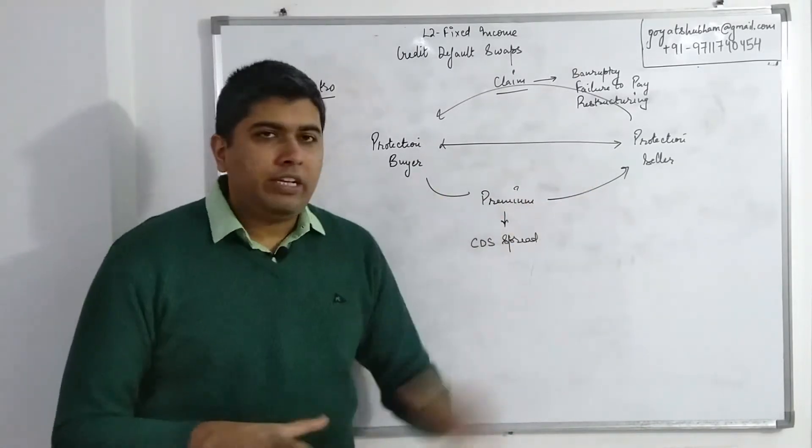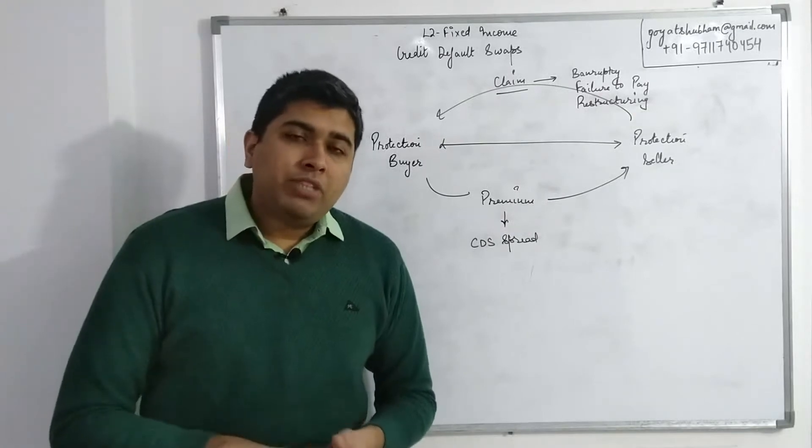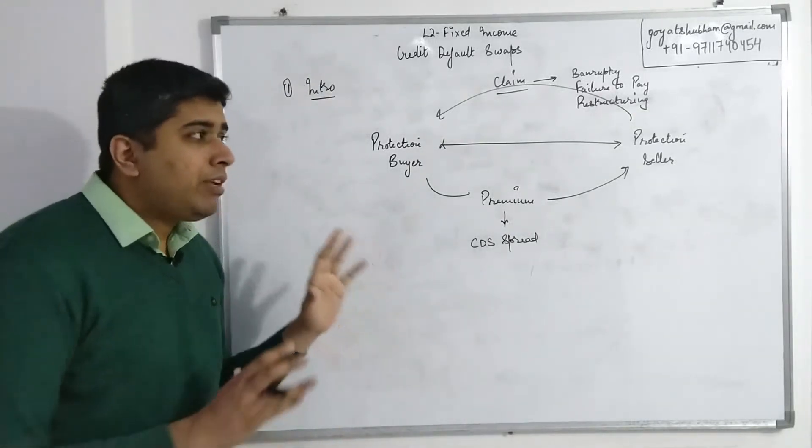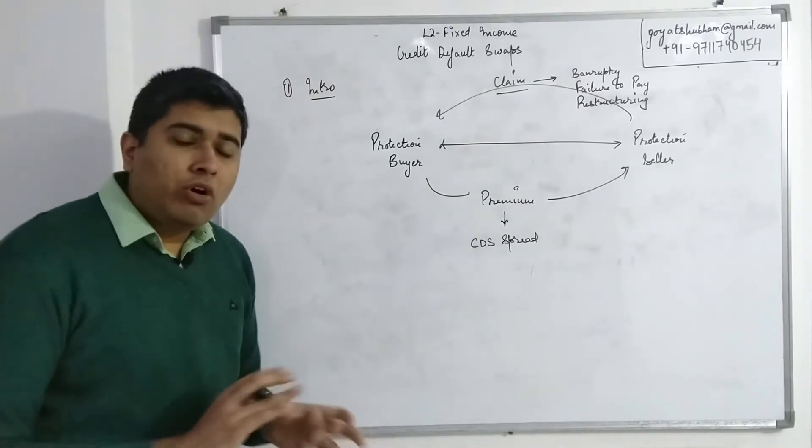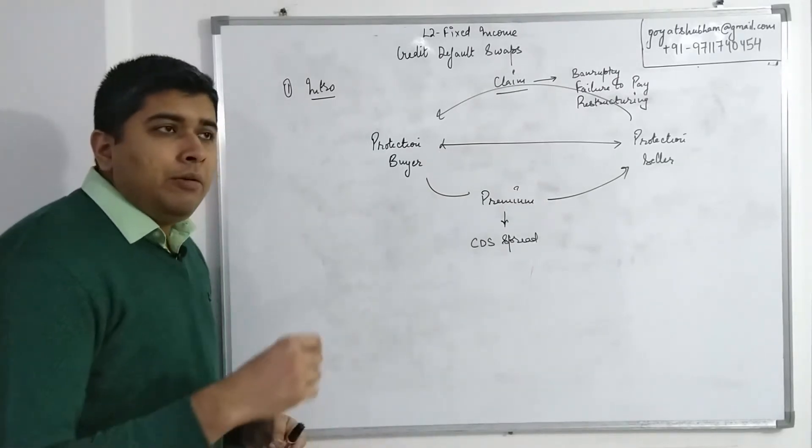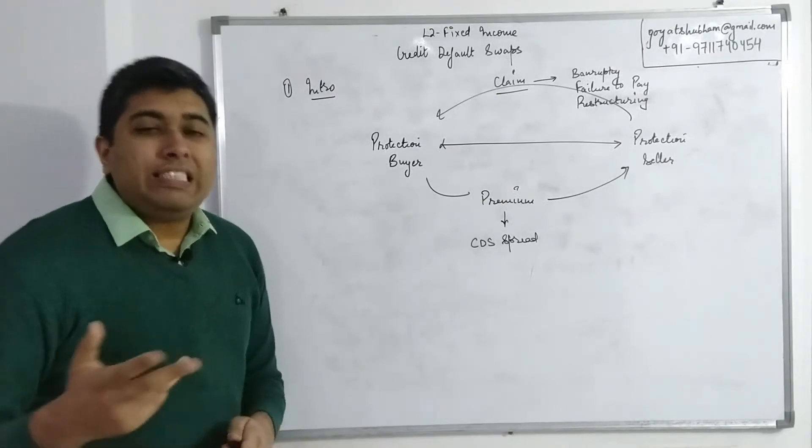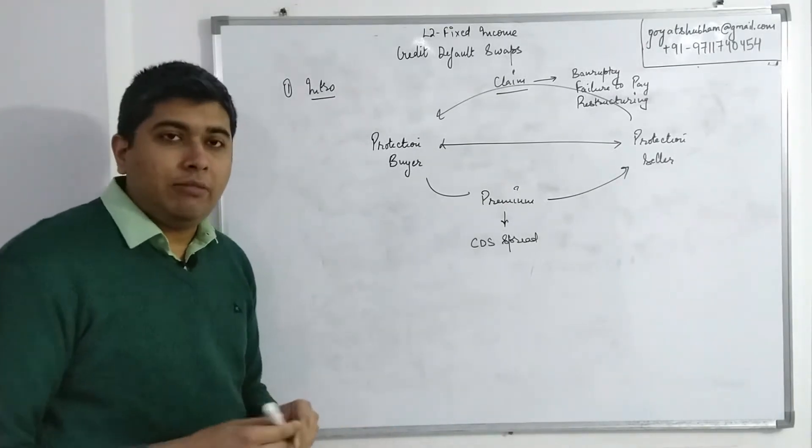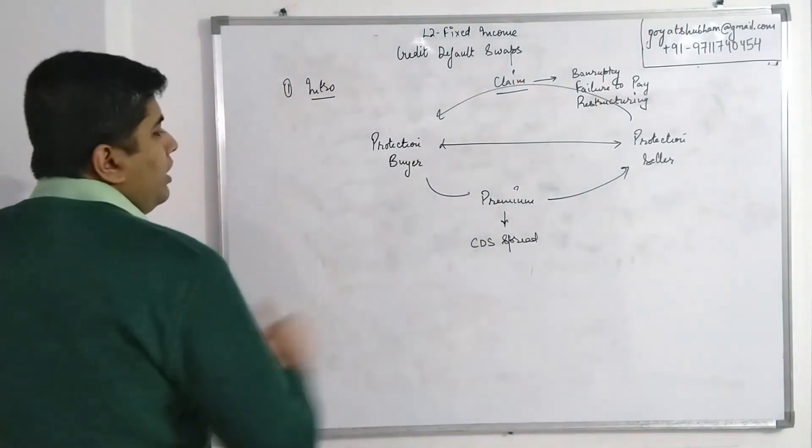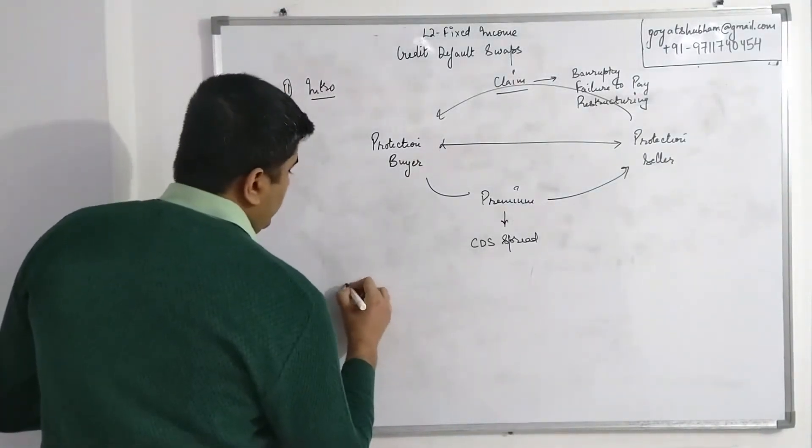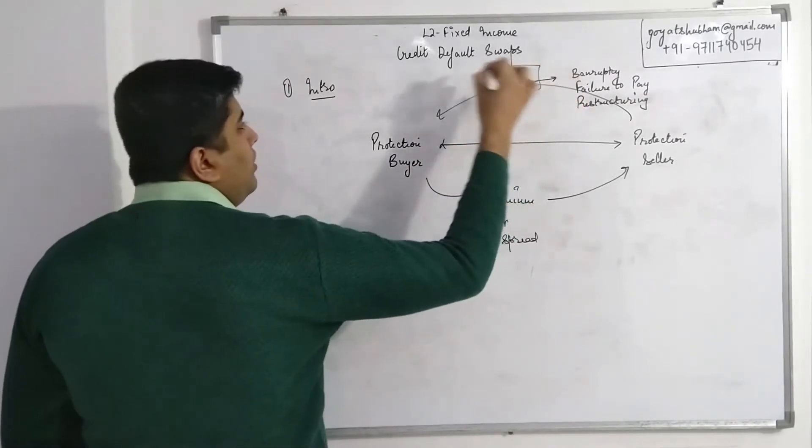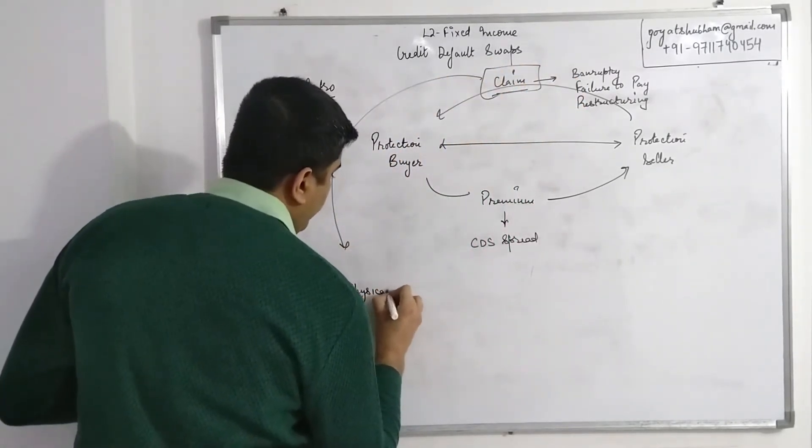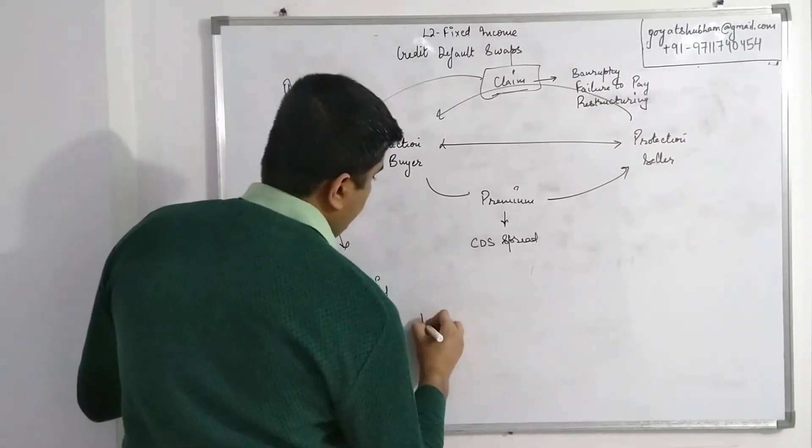If you remember from Level 1 derivatives, this chapter is part of fixed income but it will often relate to derivatives. In derivatives we had two kinds of concepts at Level 1: you could have a physical delivery and you have a cash settlement. Same can happen here as well. So the actual settlement, this claim part of transaction, this can be done in two ways. One is physical, where the buyer and seller...